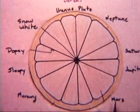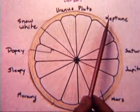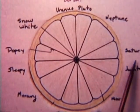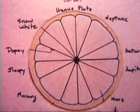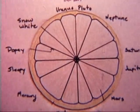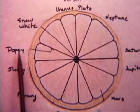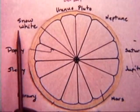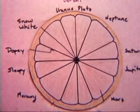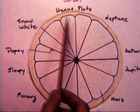Now we see Pluto, Neptune, Saturn, Jupiter, Mars, Venus, and Earth, and three others: Sleepy, Dopey, and Snow White. Sometimes a twelfth lobe is found, and this is Uranus.